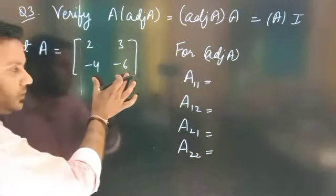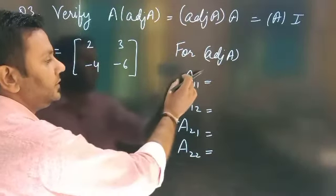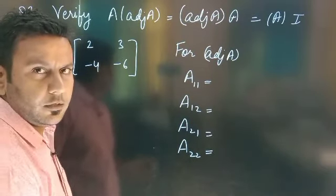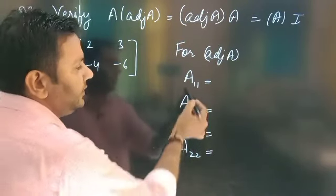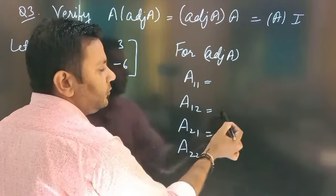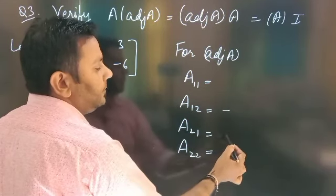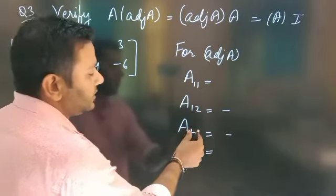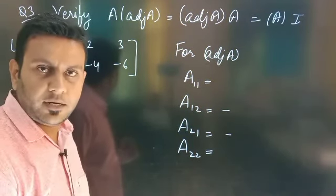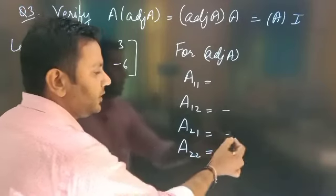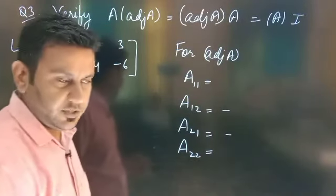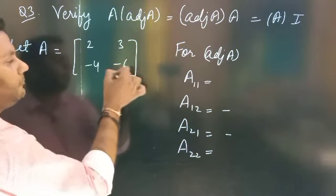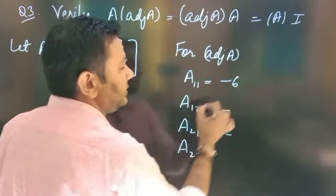A matrix के जो elements हैं, इनके cofactors आपने capital A से represent किये, positions यहाँ पर denote किये। आप सबको पता है, sign यहाँ पर alternate होते हैं। तो यह plus रहेगा, यह minus, यह minus, और यह plus — क्योंकि इन दोनों का sum जब 2 और 1 का किया, तो odd number आया। Minus 1 की power odd number में negative sign रहेगा। Directly co-factors निकालते हैं: 2 का co-factor minus 6, तो minus 6 as it is आगया।